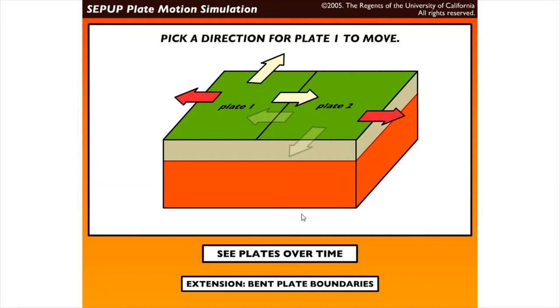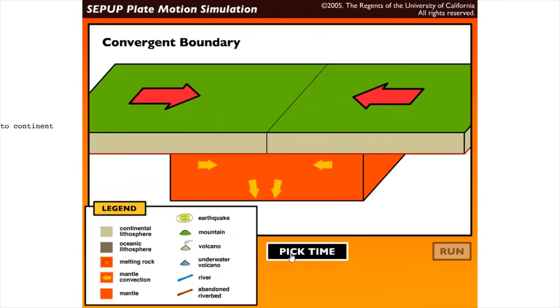And processes that will happen if those movements occur. So I have here plate motion simulations. Basically what we're going to do is just move around the simulations and observe what will happen. Let us pick a direction for plate one to move. Let's choose this, say convergent. So we have here.